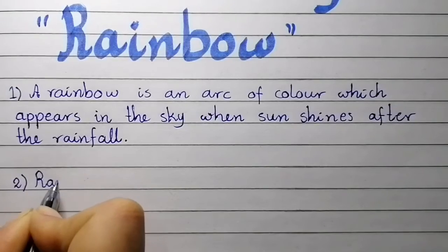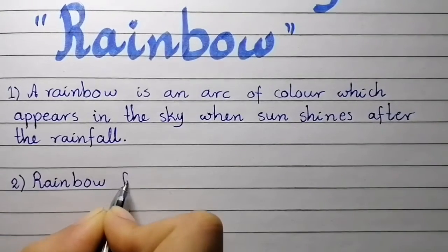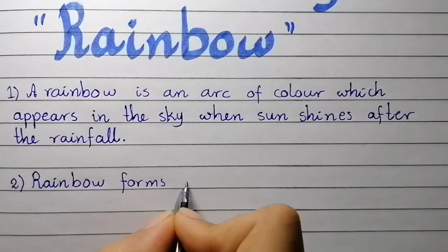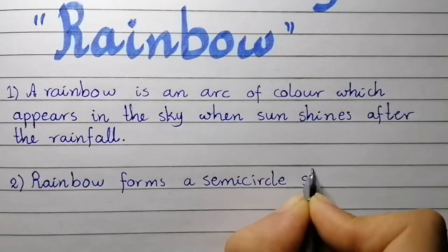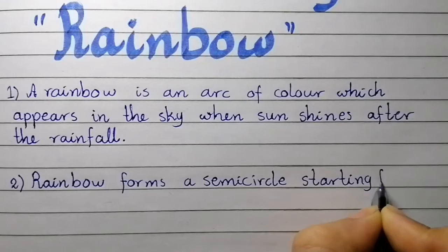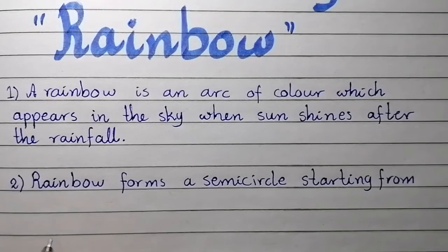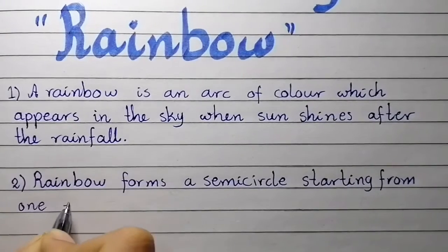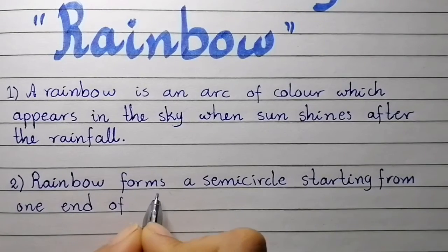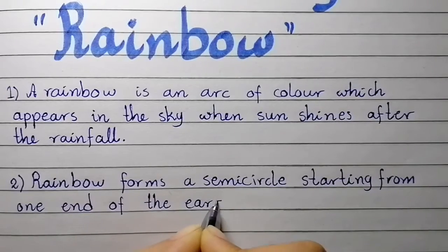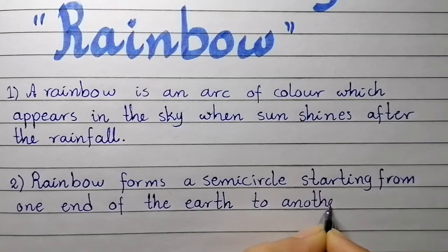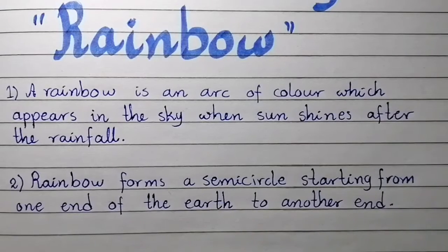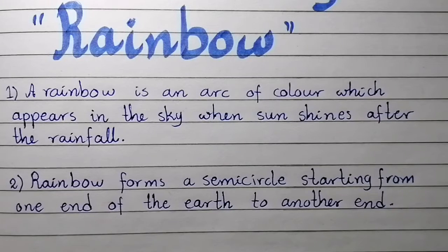Point number two: a rainbow forms a semicircle, starting from one end of the earth to another end.